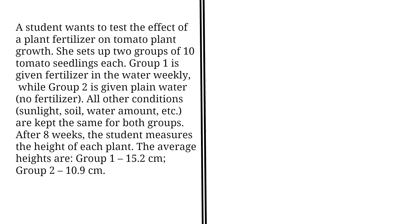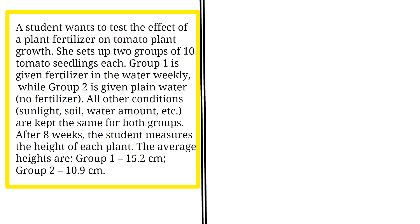Use the following passage to answer the questions below. A student wants to test the effect of a plant fertilizer on tomato plant growth. She sets up two groups of ten tomato seedlings each. Group one is given fertilizer in the water weekly, while group two is given plain water with no fertilizer. All other conditions — sunlight, soil, water amount, etc. — are kept the same for both groups. After eight weeks, the student measures the height of each plant. The average heights are: group one, 15.2 cm; group two, 10.9 cm.